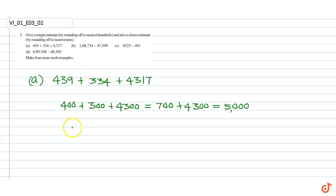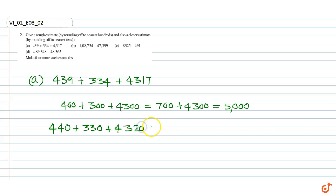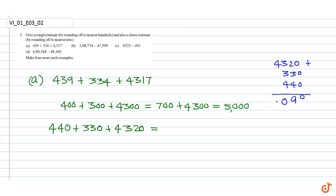By rounding off to nearest tens we get 440 plus 330 plus 4320. This is equal to 4320 plus 330 plus 440, which equals 5090.